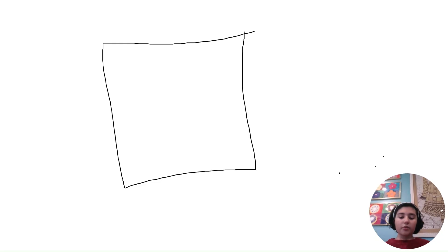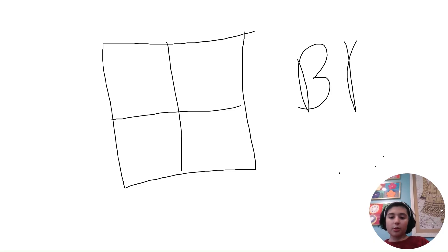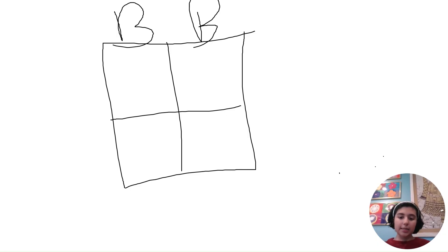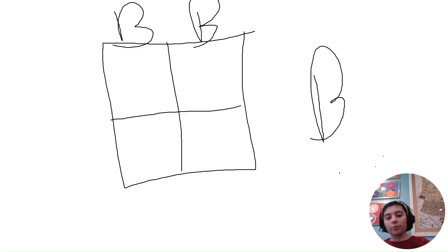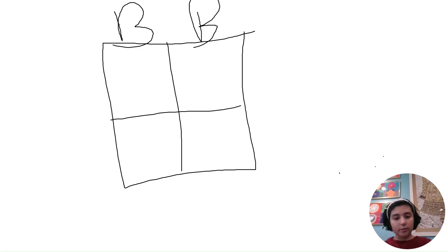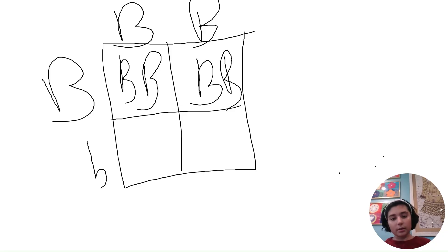I'll do one more example of a monohybrid cross. Say we're determining the color of dog fur, and brown fur is dominant to black fur. One parent is homozygous dominant with brown fur, so their genotype would be two uppercase B's. The other parent is heterozygous dominant, so their genotype would be one uppercase B and one lowercase b. We then cross the alleles in the Punnett square to get our result.